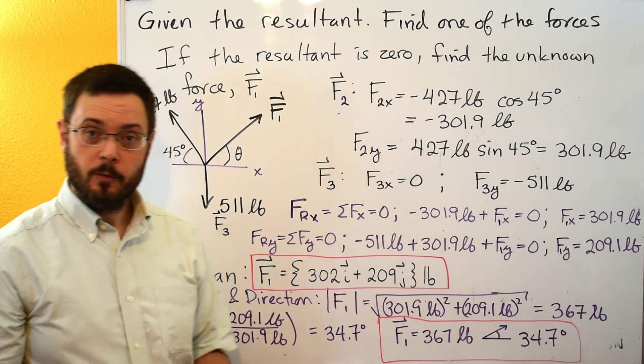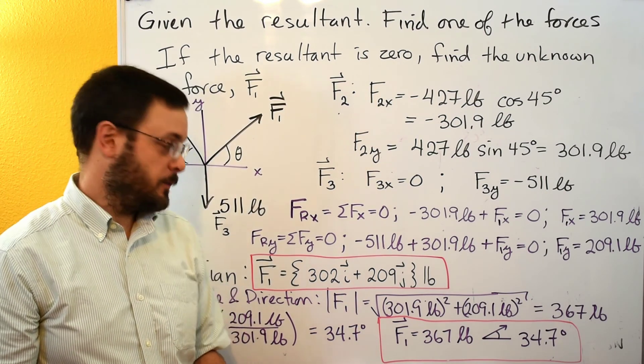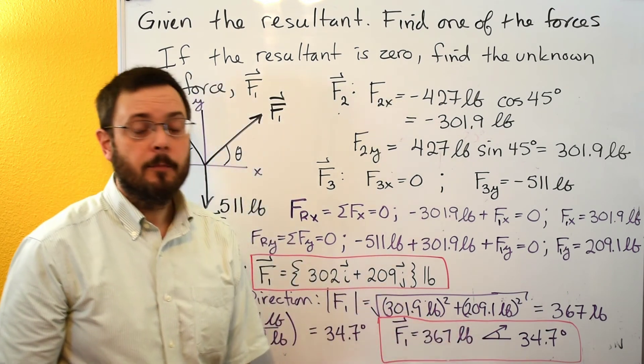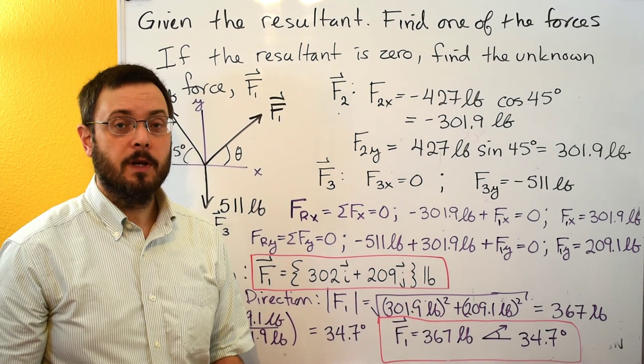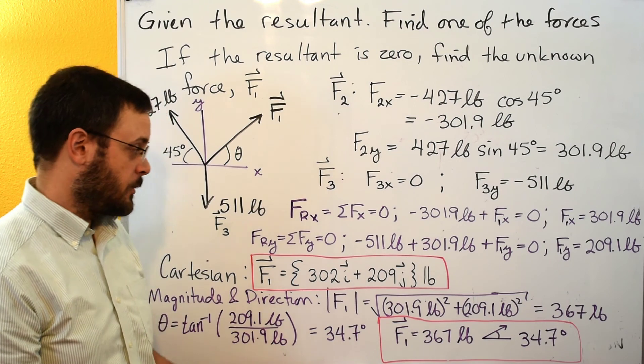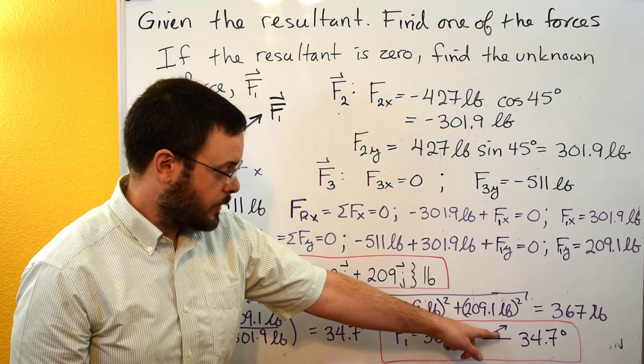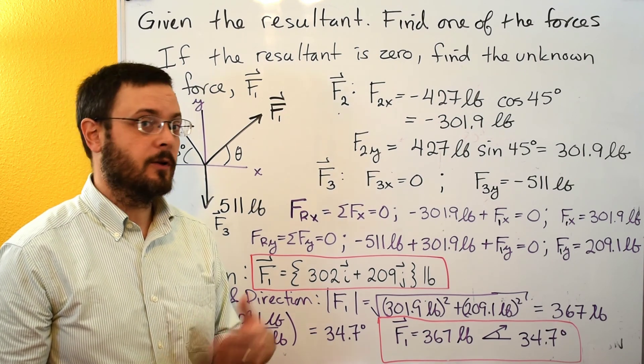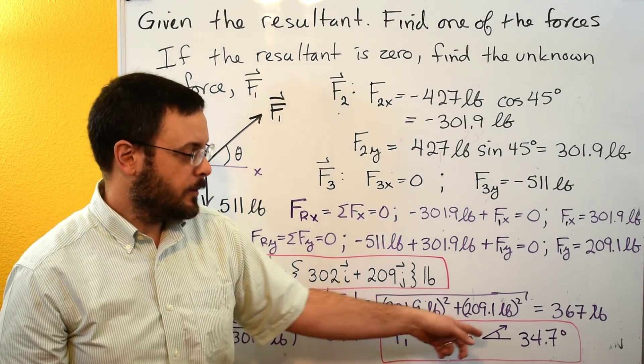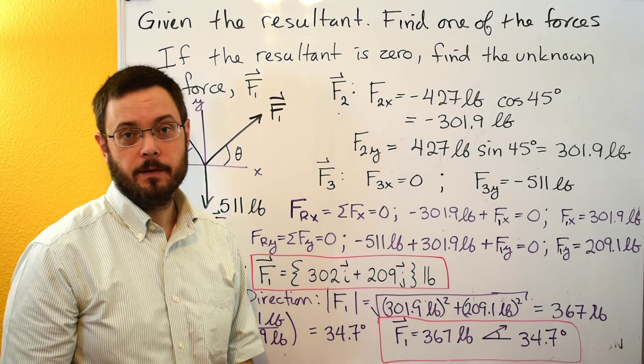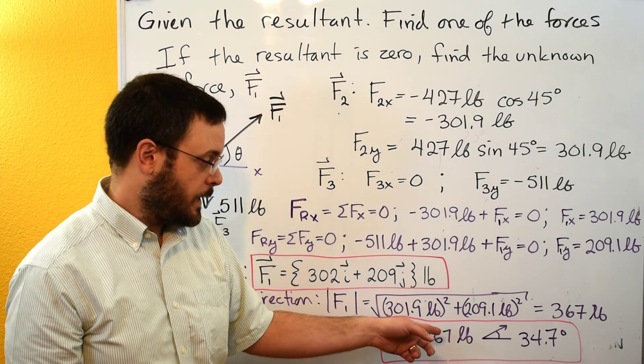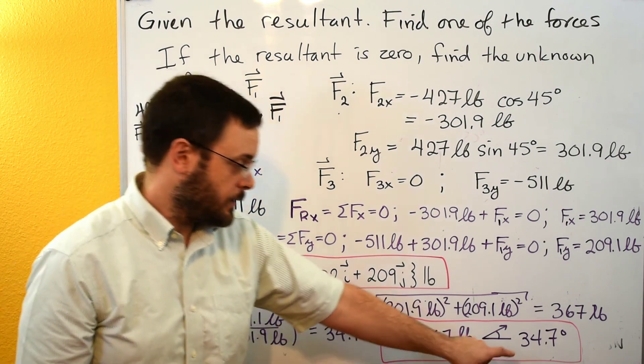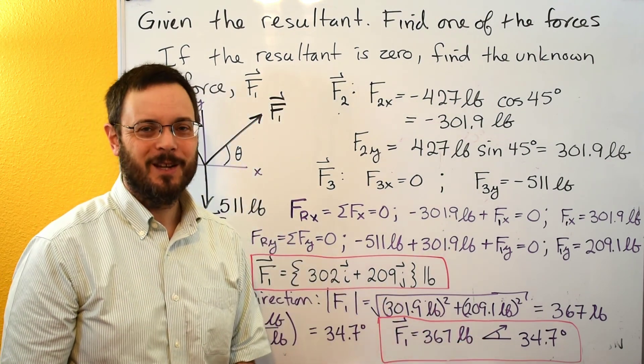And again, be careful when you're working problems out of the book. If you find that you're getting the magnitude right and the angle wrong, make sure that you're giving them the angle that they're asking for. So in this case, we gave this angle counterclockwise from the x-axis. If they'd asked us for an angle clockwise from the x-axis, we'd have to do some calculations on that, or if they'd asked us for an angle measured clockwise from the negative x-axis, we'd have to do some calculations on this. Thanks for watching!